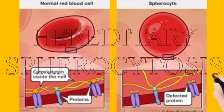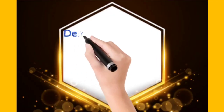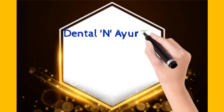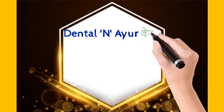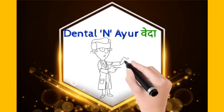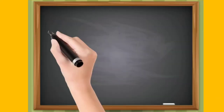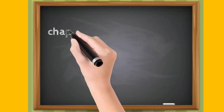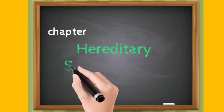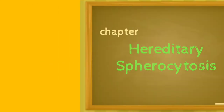Anemia can be hereditary too. Welcome to Dental and Ayurveda, a channel for basic dental and basic Ayurvedic sciences. Our today's topic is hereditary spherocytosis, which is an anemia that can be hereditary.